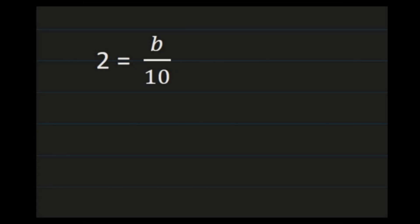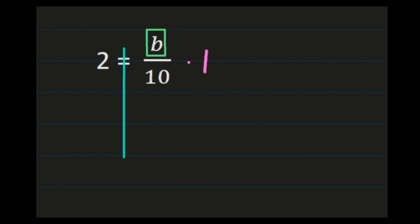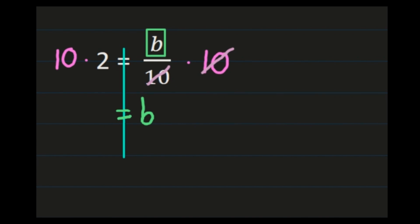For our final problem, we have 2 equals b over 10. The variable is on the right-hand side, but that doesn't matter — all of our steps stay the same. We isolate variable b, box it, and add the center line to keep both sides balanced. Since b over 10 is b divided by 10, the inverse operation is to multiply by 10 because that's what's with b. Multiplying both sides by 10, the 10s on the right simplify out leaving b, and on the left 10 times 2 is 20. So b equals 20.